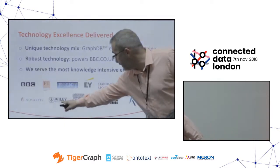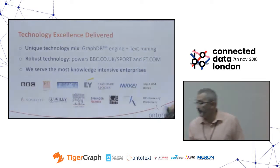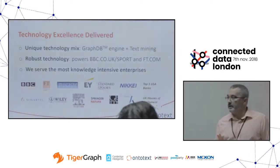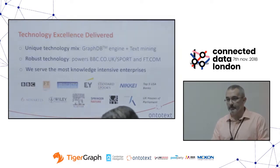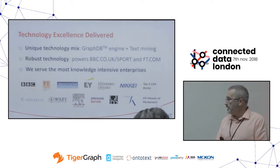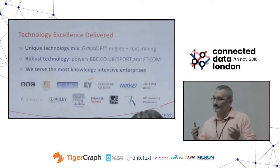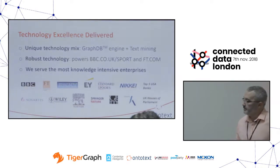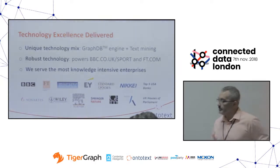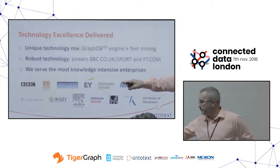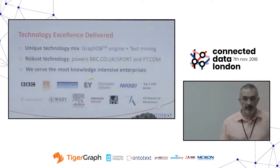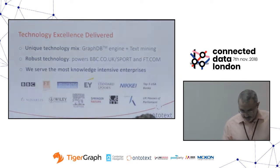You see many of them being in publishing. We have three out of the top five science, technology, and medicine publishers. I'll speak a bit more on BBC because this was sort of the first pioneer project demonstrating that this technology can be used in media and publishing. Nowadays we're more into business information, for people like Standard & Poor's and Nikkei.